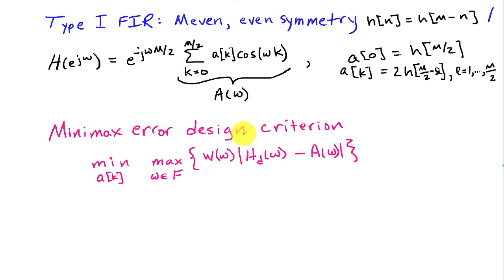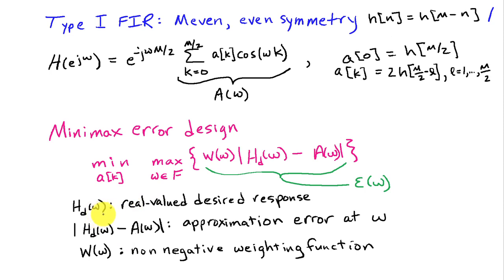And then there's a weighting function as well, W of omega. So the HD is a real value desired response. And then HD minus A of omega, absolute value, is going to be the approximation error at frequency omega. And W of omega is a weighting function that allows us to emphasize some frequencies as being more important than others. And we'll call the quantity here that we're trying to minimize the maximum value, we'll call that epsilon of omega.